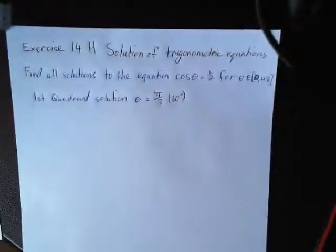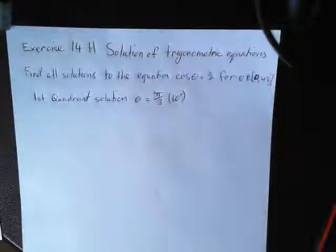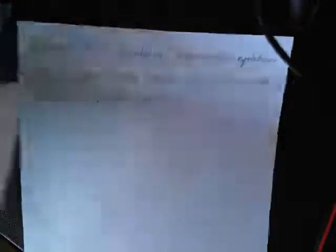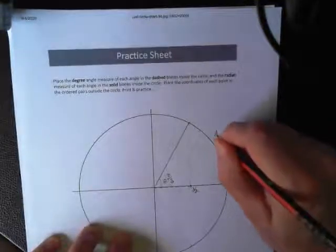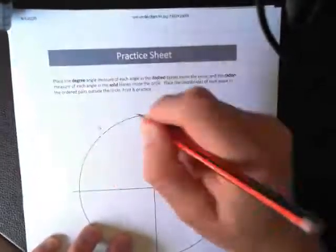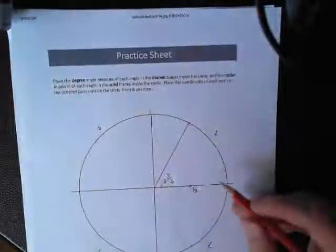But we need more than one solution here. When else is cos theta equal to a half? If we jump back to our unit circle, we're going to make sure our idea that in this quadrant, all are positive. In this quadrant, sine is positive. In this quadrant, tan is positive. In this quadrant, cosine is positive. All stations to city.